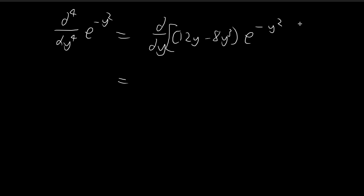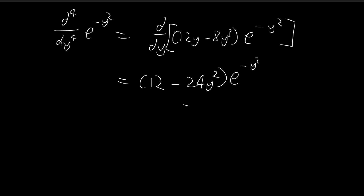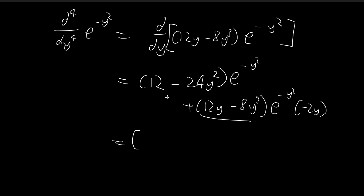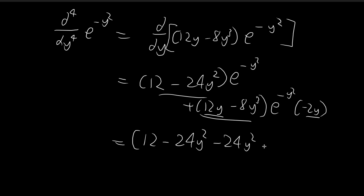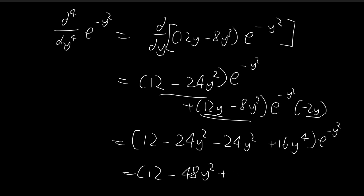Differentiating using the product rule, we differentiate the polynomial to get 12 minus 24y squared, retain the exponential, then retain the polynomial and differentiate the exponential giving a factor of negative 2y. Combining the terms, we get 12 minus 24y squared minus 24y squared, plus 16y to the power of 4. This simplifies to 12 minus 48y squared plus 16y to the fourth, times e to the power of negative y squared. This is the fourth derivative.